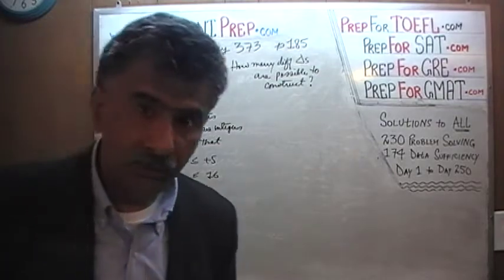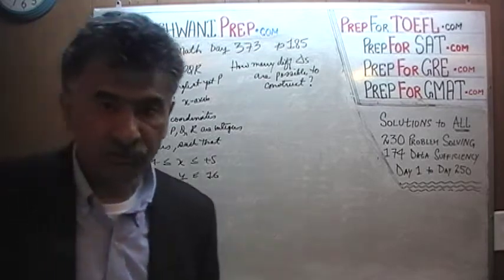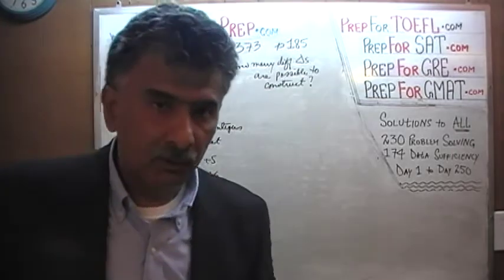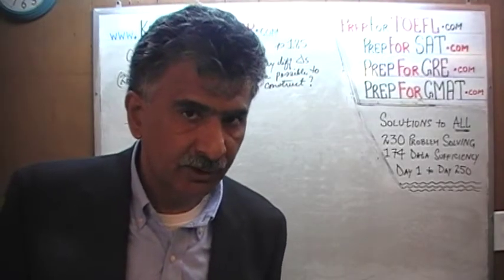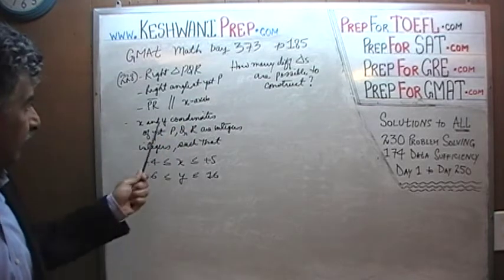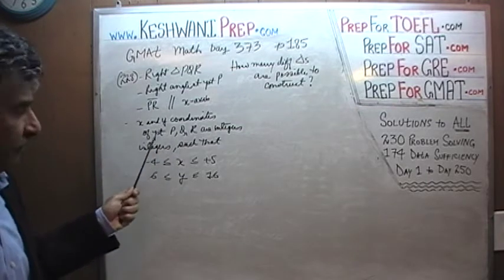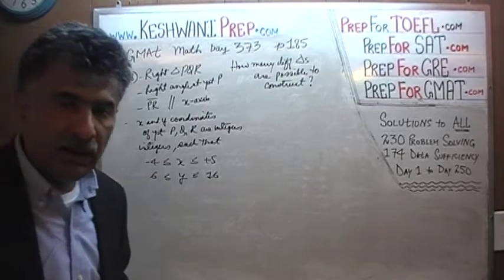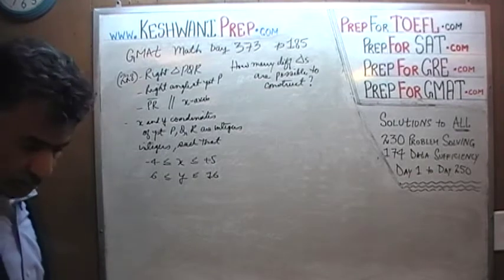Problem number 228 is already on the blackboard. Here is what the problem tells us: we are going to construct a triangle PQR. The first condition is that it must be a right-angle triangle and the right angle needs to be at point P. The second condition is that line PR has to be parallel to the X-axis. The third condition is that the X-coordinate and Y-coordinate of all three points P, Q, and R need to be whole numbers — they have to be integers.